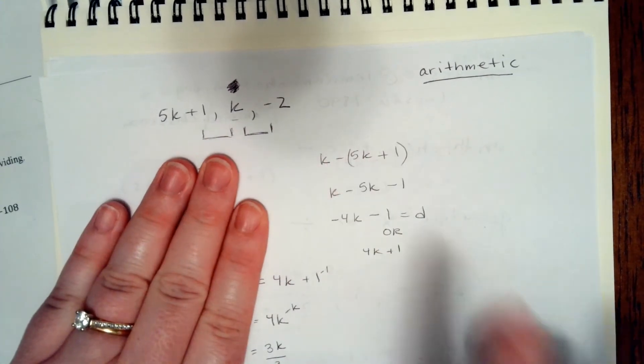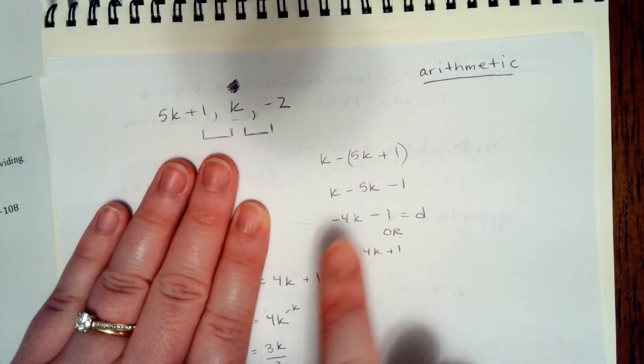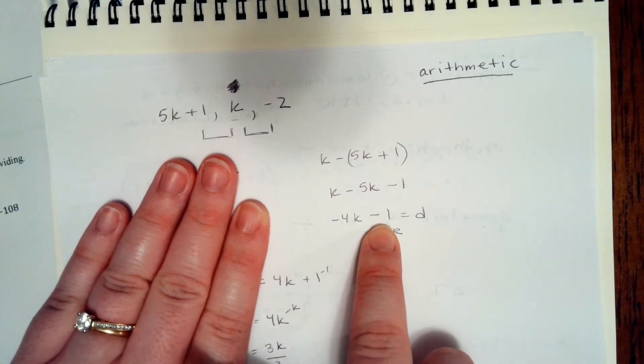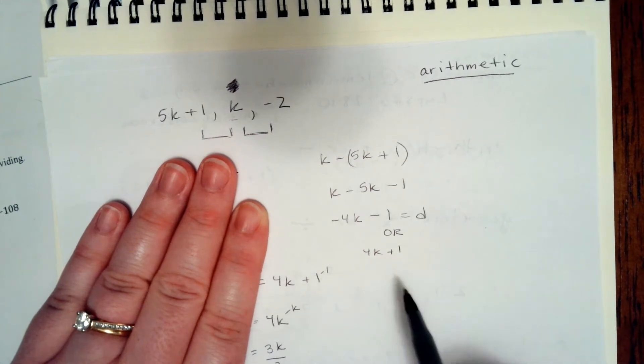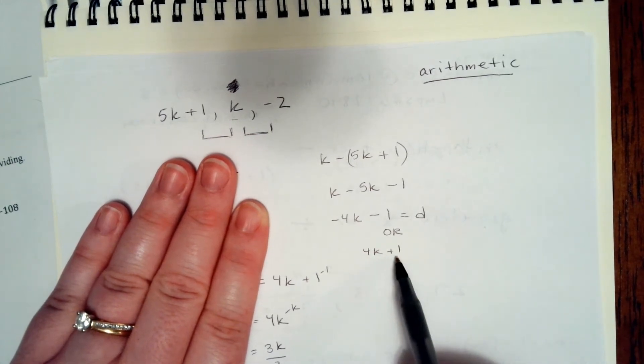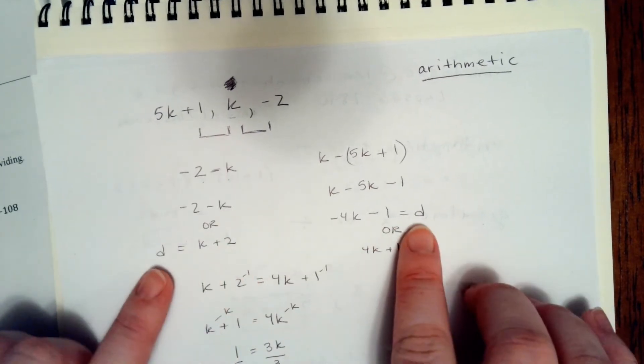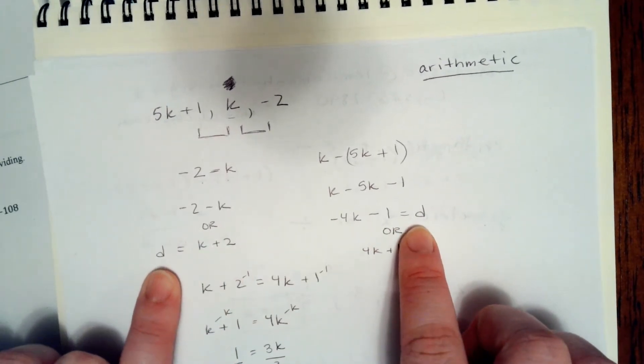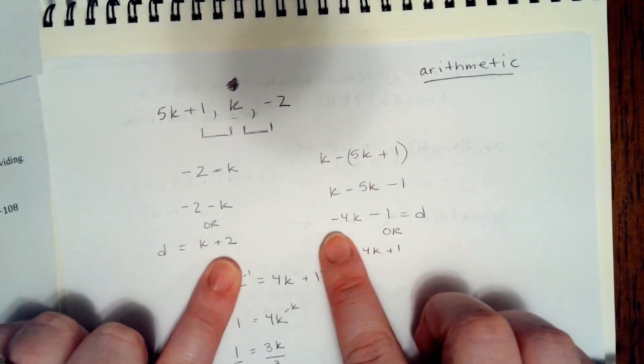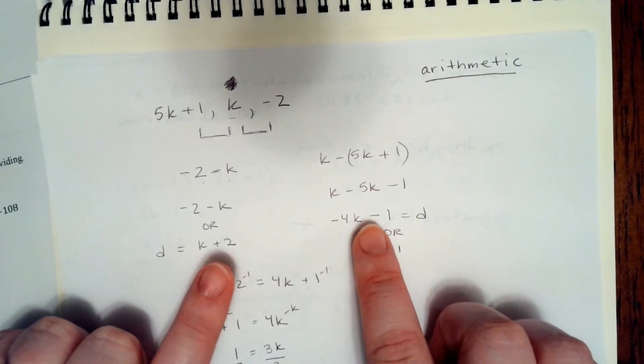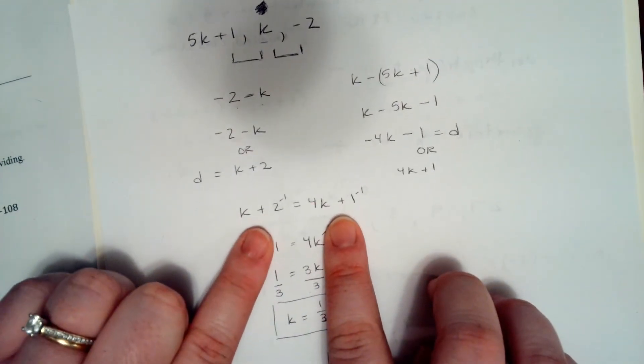Over here when we simplify k minus 5k minus 1, we get negative 4k minus 1, or if we divide by negative 1, we get 4k plus 1. So we know that those differences are equal to the same amount even though the equations aren't the same. We know that when we solve it out, those are going to equal the same amount, so we can set them equal to each other.